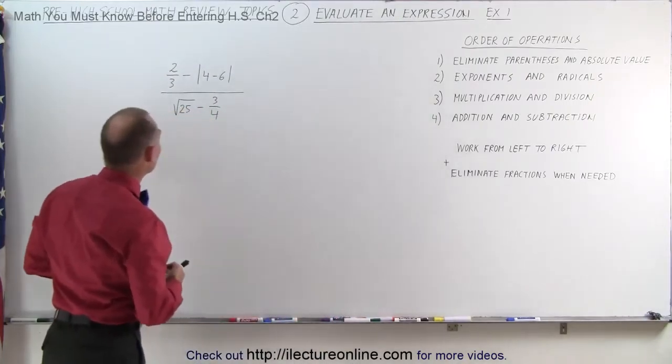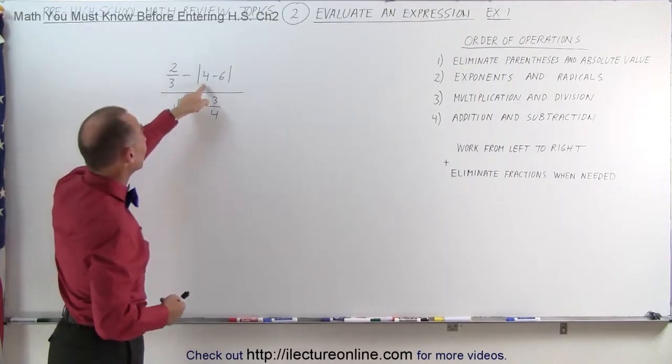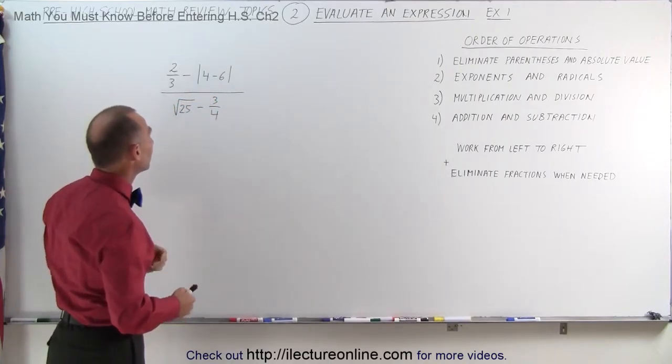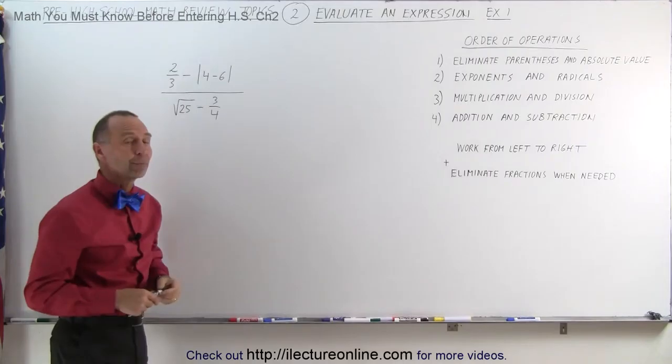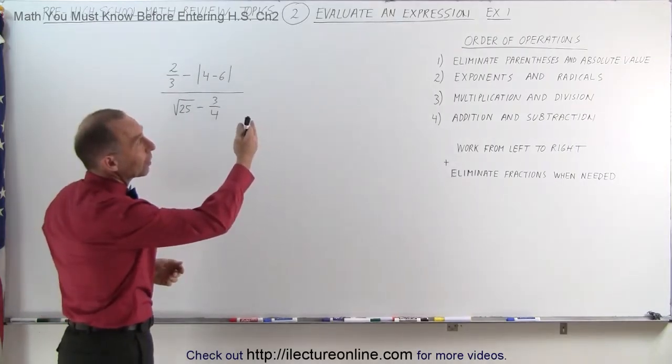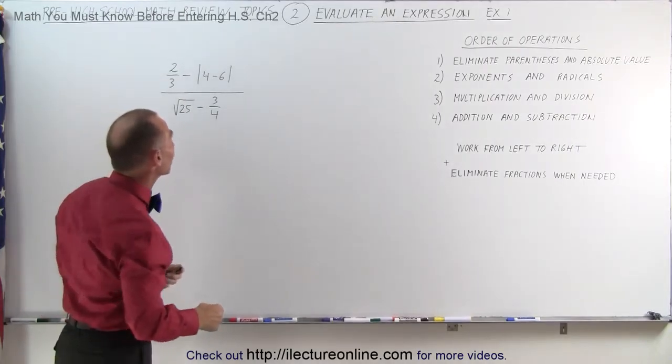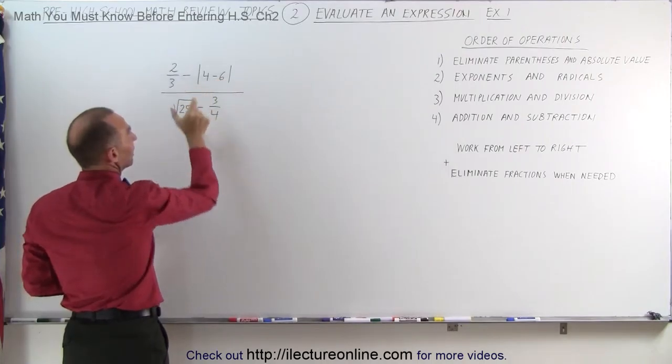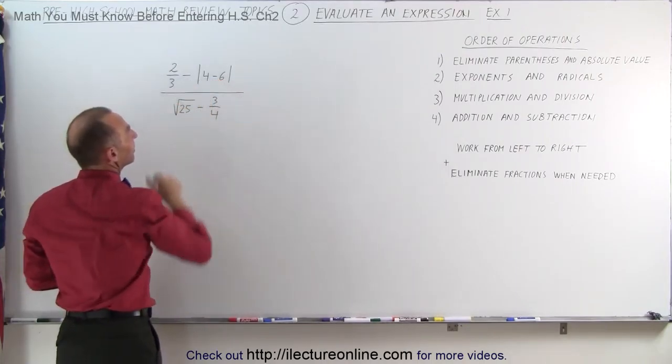So here's our first example. Notice we have fractions, we have an absolute value symbol, we have a radical. How do we do that? Well, first of all, we say we want to eliminate parentheses and absolute value symbols. So let's concentrate on this part right here. First let's work out what's inside of that.